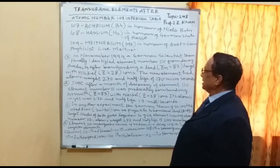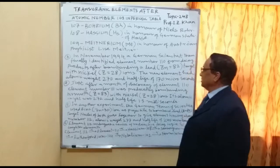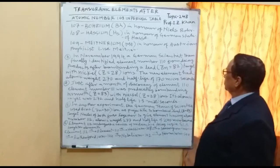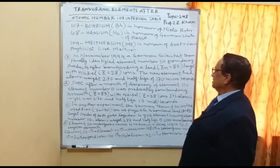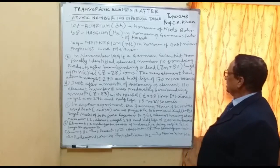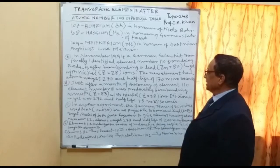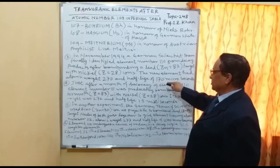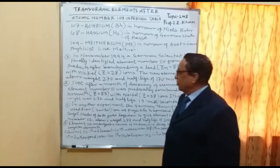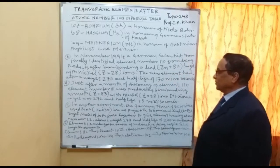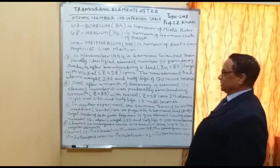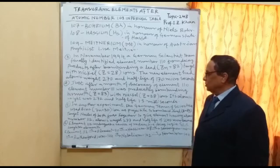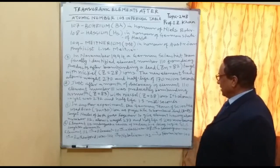In November 1994, a German scientist team identified element number 110 from decay products after bombarding a lead (Z=82) target with nickel (Z=28) ions. The new element had atomic weight 270 and a half-life of 170 microseconds. Just one month after the discovery of element 110, element 111 was produced by bombarding bismuth (Z=83) with nickel (Z=28); its atomic weight was 272 and half-life was 1.5 milliseconds.